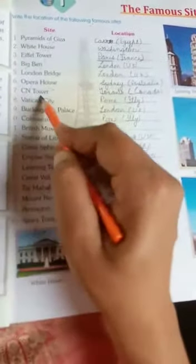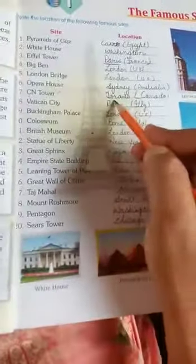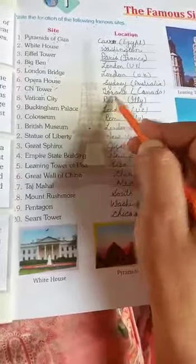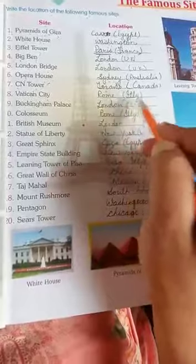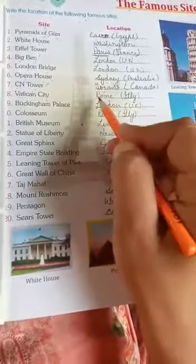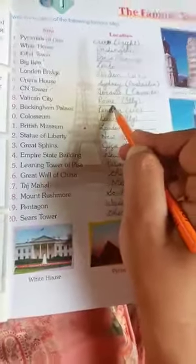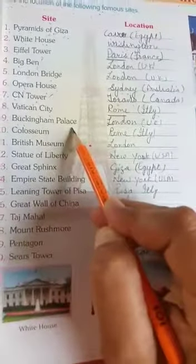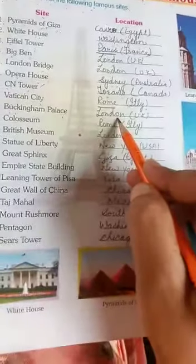CN Tower, Toronto. Vatican City, Rome in Italy — you will learn Rome. Buckingham Palace in London.